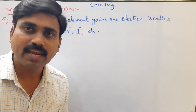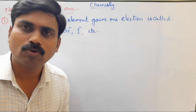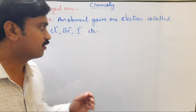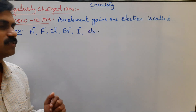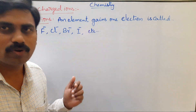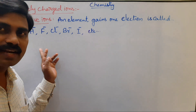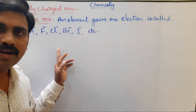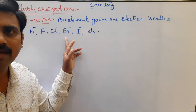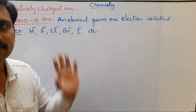Now, negatively charged ions. For mono-negatively charged ions, an element gains one electron. Examples: hydride ion H⁻, fluoride ion F⁻, chloride ion Cl⁻, bromide ion Br⁻, iodide ion I⁻.